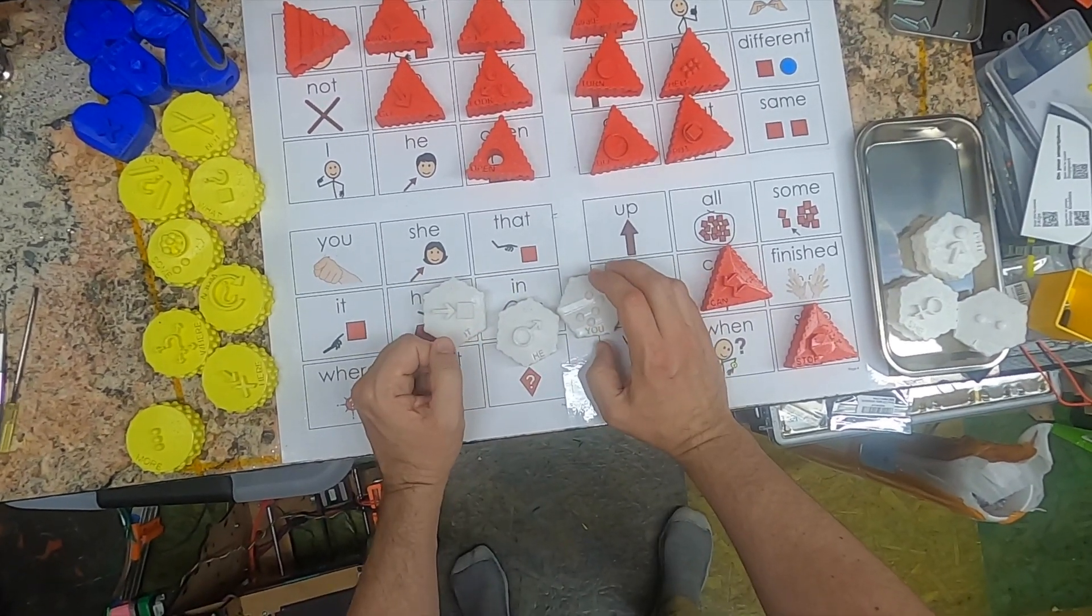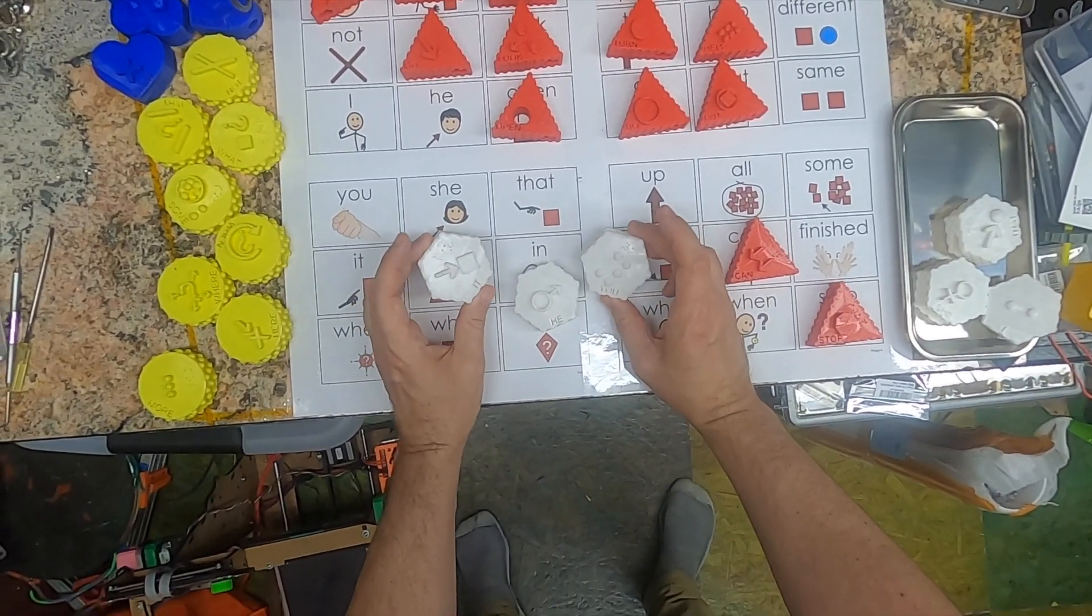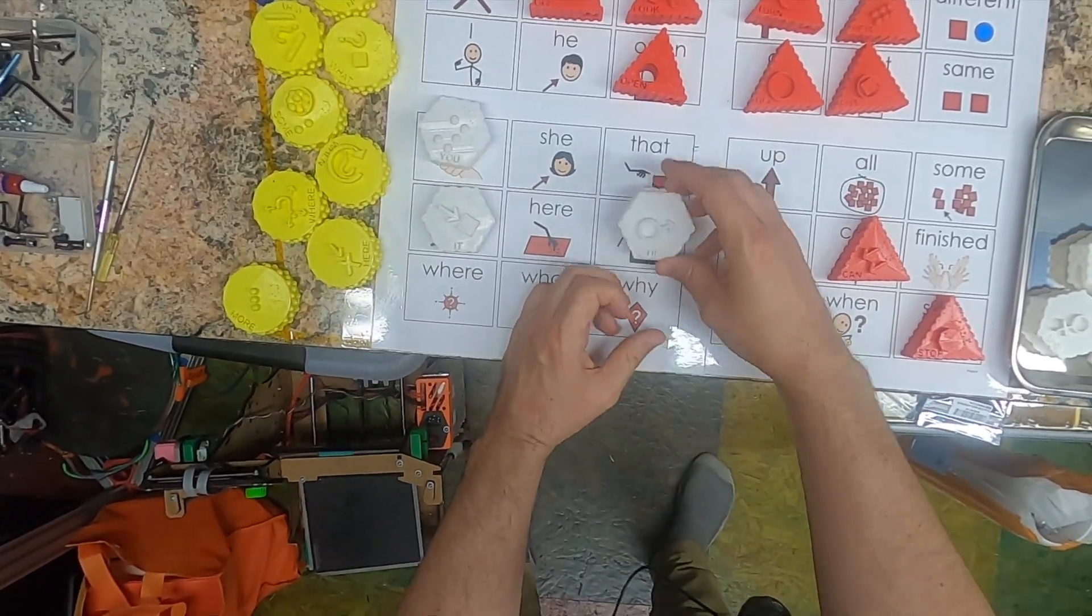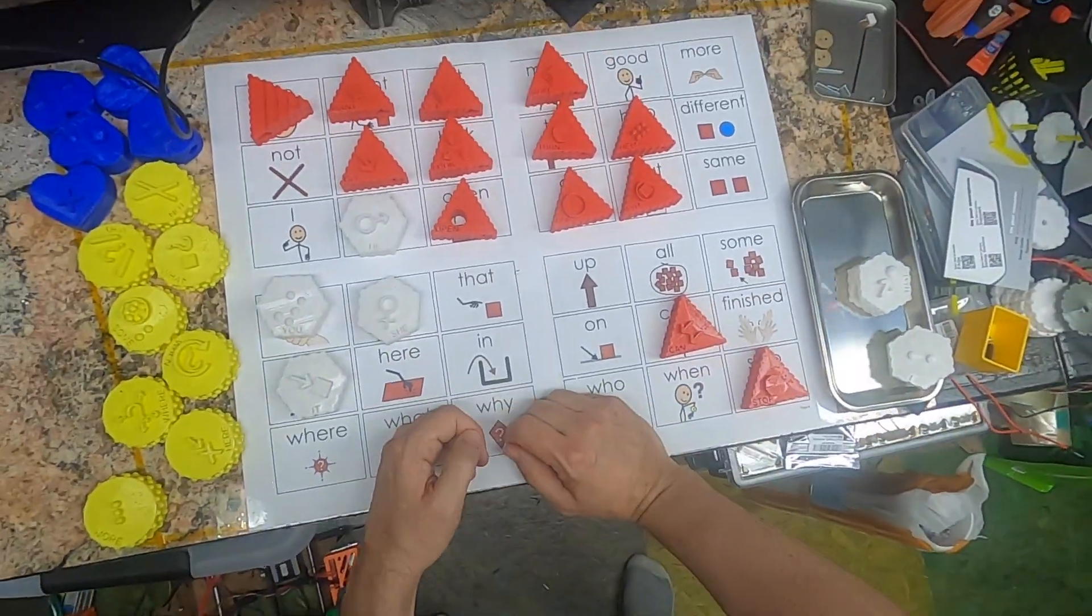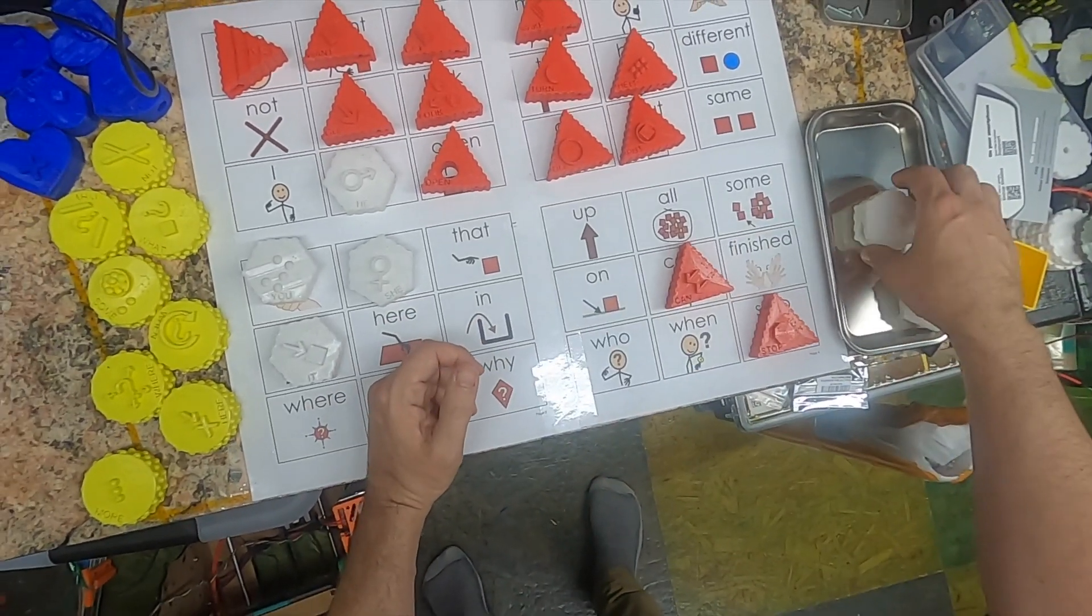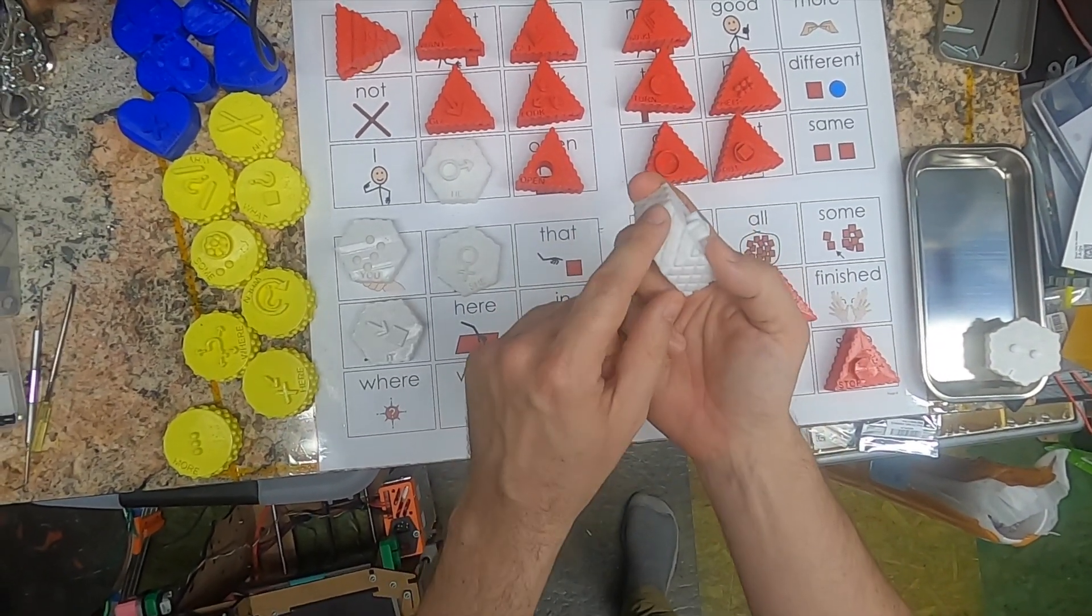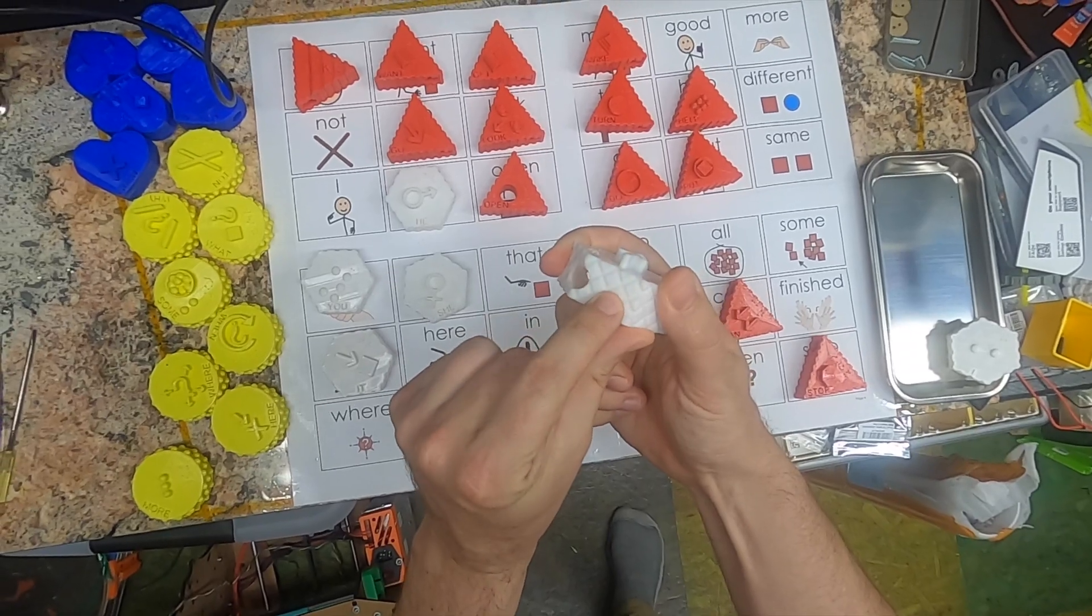These 3D symbols are loaded with meaning, starting with a color. The white symbols are all pronouns: it, you, he, she. The pronoun as a notion is also encoded in the hexagonal shape, as well as the cross-hatch texture on the side.